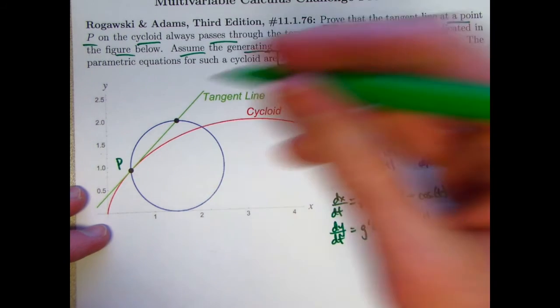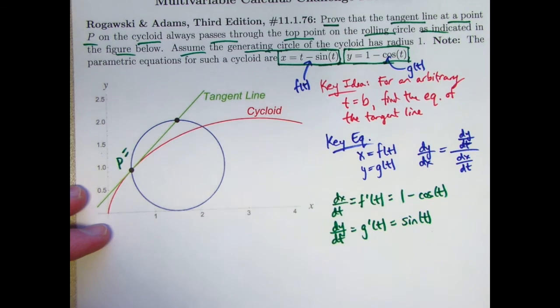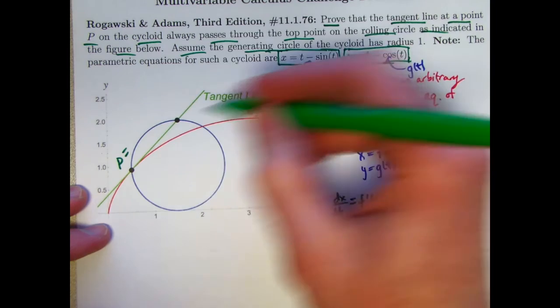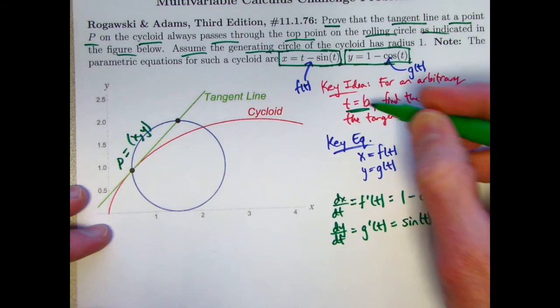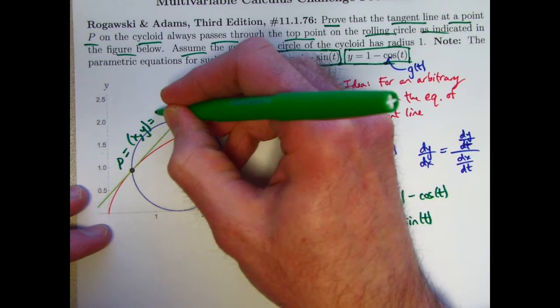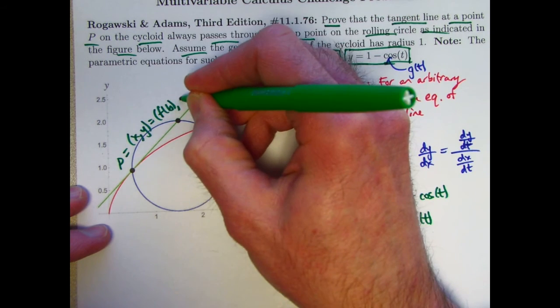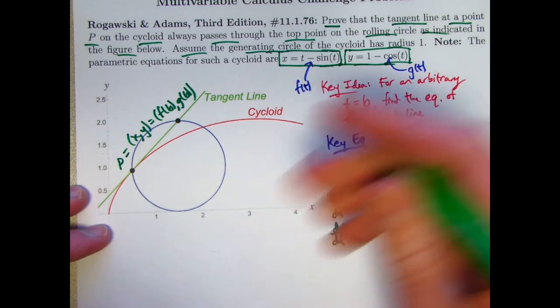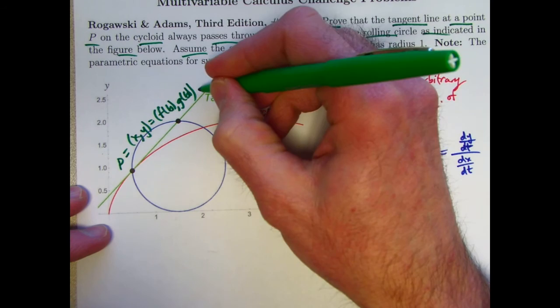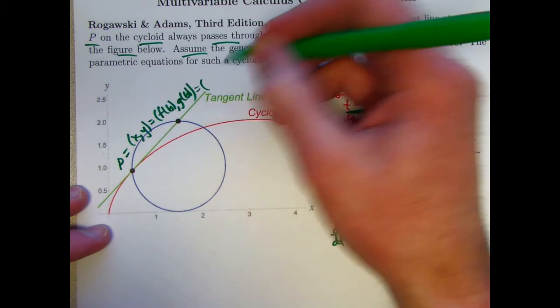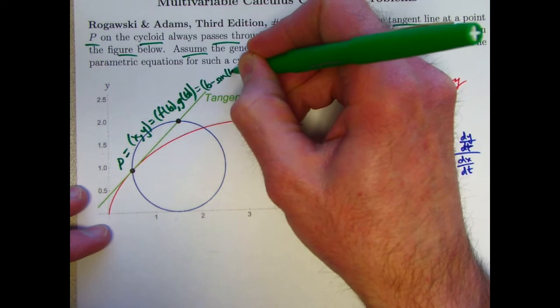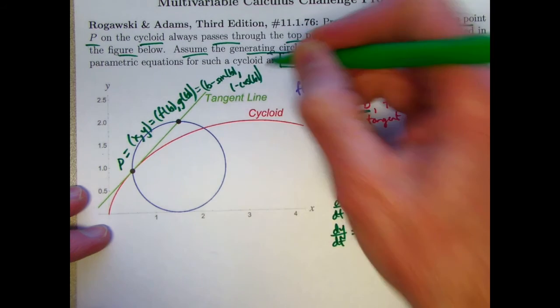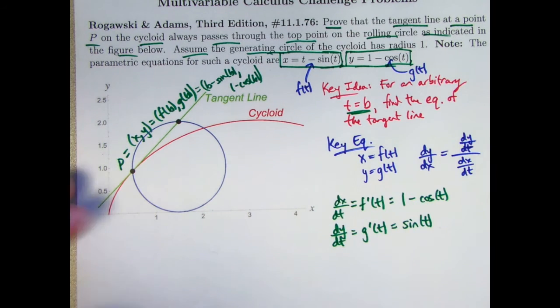Now, where do we go from here? So P at an arbitrary moment in time, t equals b, has coordinates, x and y coordinates, that can be found by plugging b into f and g. So I'm imagining b to be the moment in time when I happen to be at this point. So that's the coordinates of this point: b minus sine b and 1 minus cosine b. And that is the moment in time, t equals b, when I'm at this point.